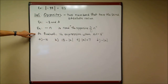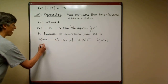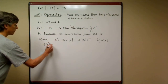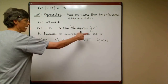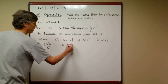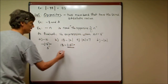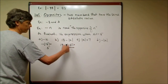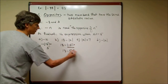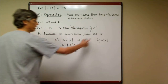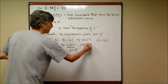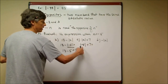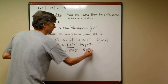Now let's evaluate expressions when x is negative 5. The first is the opposite of x: the opposite of negative 5 is 5. The second is 13 minus the absolute value of x: substituting, that's 13 minus the absolute value of negative 5, which is 5, giving us 13 minus 5. The third is the absolute value of x plus 7: the absolute value of negative 5 is 5, and 5 plus 7 is 12.